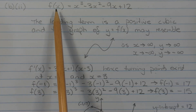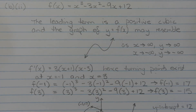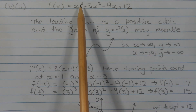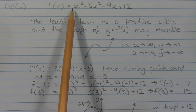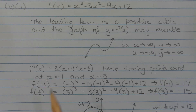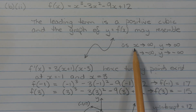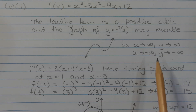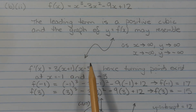From Part 1, f(x) equals x cubed minus 3x squared minus 9x plus 12. This is a polynomial with a positive cubic leading term — its highest power is 3 and the leading coefficient is 1, which is positive. As x approaches infinity, y approaches infinity, and as x approaches negative infinity, y approaches negative infinity.